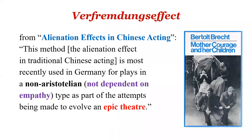V is for Verfremdungseffekt — also called the Alienation Effect, A-effect, or V-effect — a concept introduced by German playwright Bertolt Brecht in his theory of Epic Theatre, as seen in the play Mother Courage and Her Children. Unlike Aristotelian drama, which aims to evoke pity and fear so the audience connects emotionally with what is staged, Brecht's non-Aristotelian theater requires that the play should not depend on empathy — the audience should not lose themselves in identification with the characters.